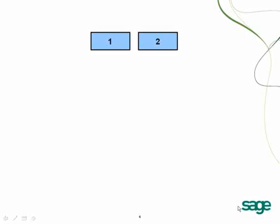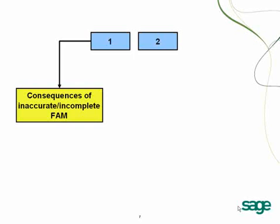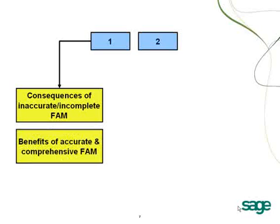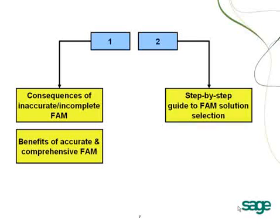Before we get started, I want to give you a high-level view of how the content in this webcast is organized and how I'll present it to you. Today's presentation is divided into two main sections. In the first section, I'll be discussing the most common and significant negative consequences resulting from inaccurate or incomplete fixed asset management data, and also the many positive consequences arising from accurate and complete data. In the second section, I'll be giving a detailed presentation of a step-by-step guide that anyone could use when selecting a fixed asset management solution that best meets their wants and needs. Let's get started.